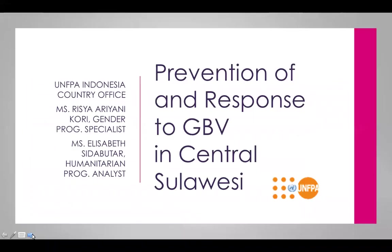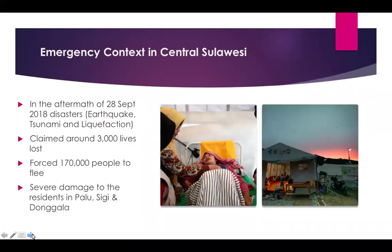Now I'd like to turn to our colleagues from Indonesia for a case study on the GBV response in Central Sulawesi. The intervention follows the 28 September 2018 disasters when Central Sulawesi experienced an earthquake, tsunami, and liquefaction, with around 33,000 lives lost and 170,000 people forced to flee. The districts of Palu, Sigi, and Donggala were the most affected areas. As background, in 2010 the government established integrated multisectoral services for GBV — coordinating services for women and children victims of violence — established at the provincial and district level, but not at the community-based level.